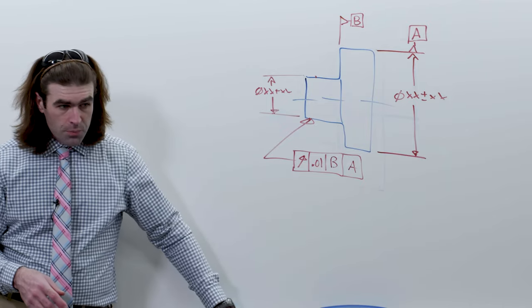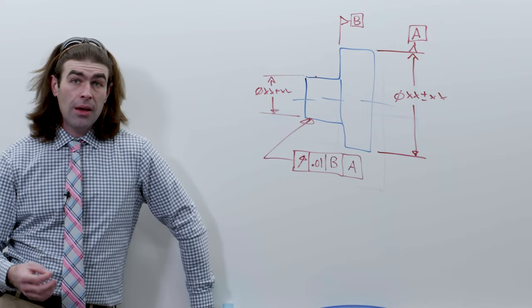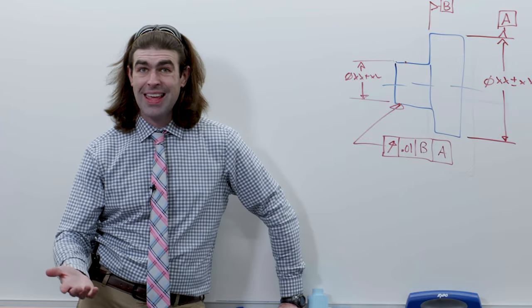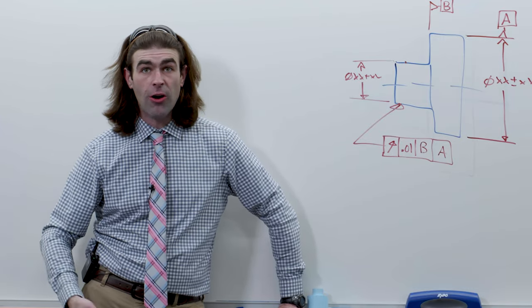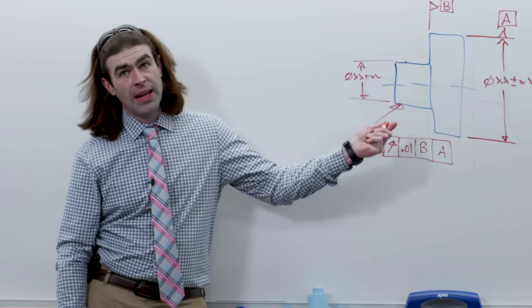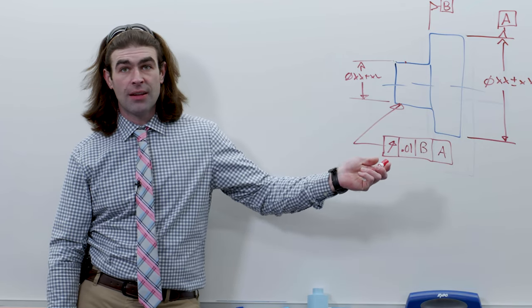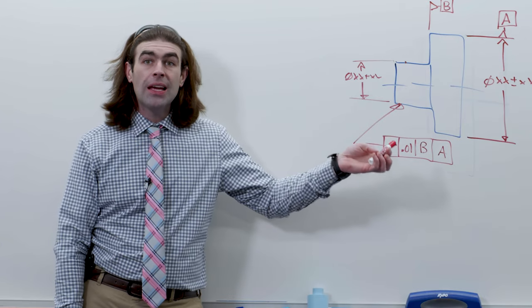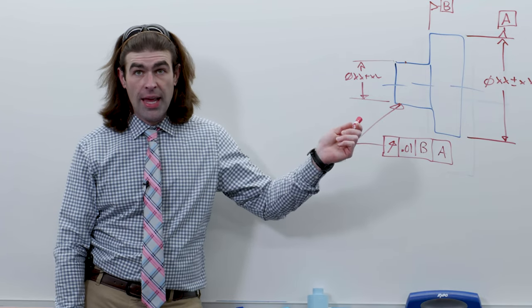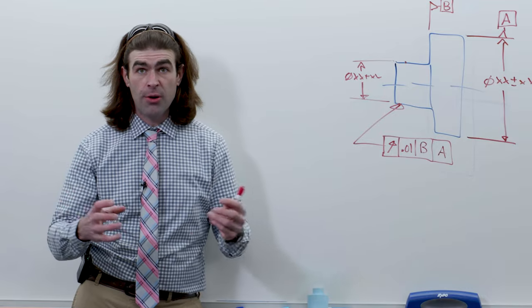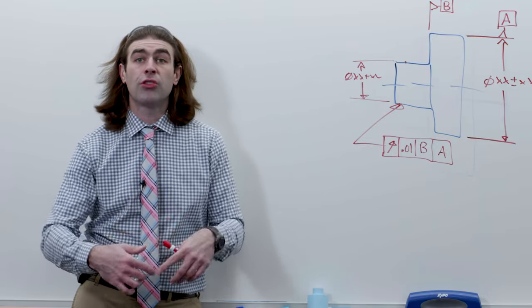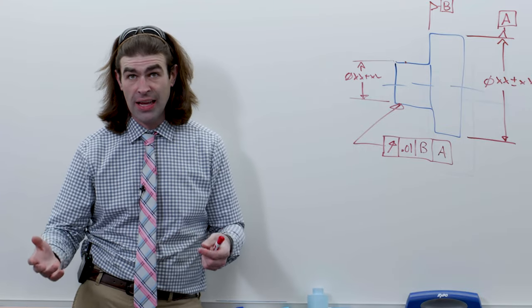Anything that spins, especially at high speed, runout is a good tolerance to apply. Now the last thing you'll see on older drawings would be called full indicator movement, FIM, or total indicator reading, TIR. So it might point to a diameter and say total indicator reading, you know, five thousandths. The important thing with GD&T is that you're specifying which diameter is the datum. If you have several diameters, think about like a stepped pulley, it matters which one you grab to inspect the rest of the diameters.